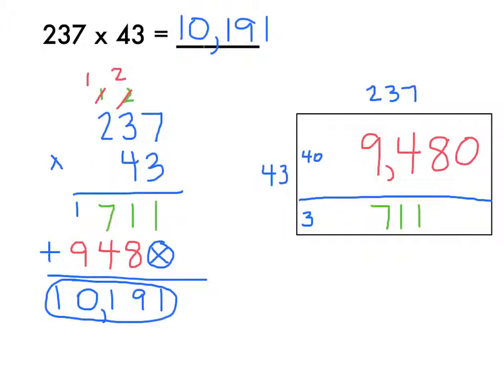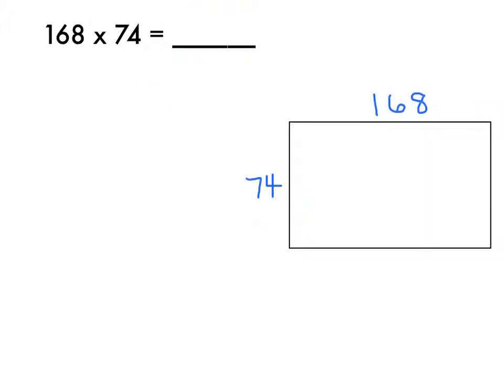And you can see that that makes sense because if you look at my array, I have 9,480 and 711. And if I were to add that together, I'd get 10,191. Let's try another problem.